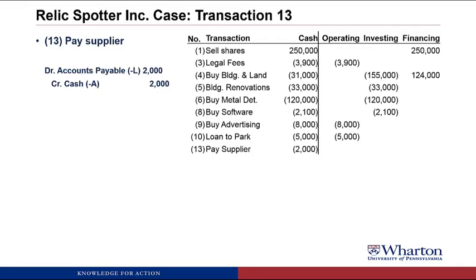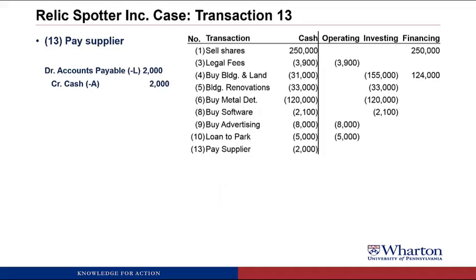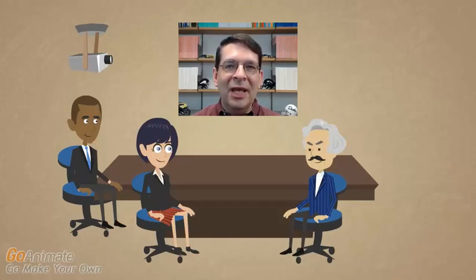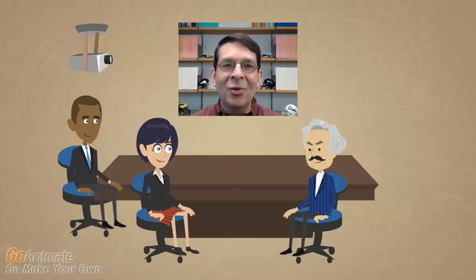We skip a couple of non-cash transactions and go to transaction number thirteen, where Relic Spotter paid $2,000 cash to its supplier for the inventory it bought on account in transaction seven. The answer is a $2,000 operating cash outflow. A payment to a supplier is one of the examples we use to define an operating activity.